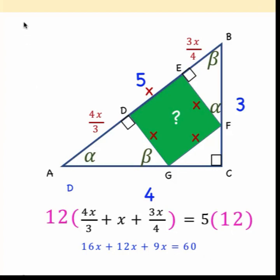Let's continue our computation here. 16x plus 12x plus 9x is equal to 37x, and then that is 60. And so finally, divide by 37 to get x equals 60 over 37.